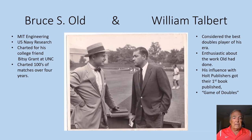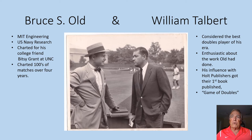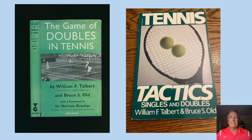When it was published it sold over 50,000 copies. Eventually these two wrote an additional three books, and they each sold about 50,000 copies as well. It became the bible for tactics for singles and doubles of the day. The first book was The Game of Doubles in Tennis, and the last was The Tactics of Singles and Doubles. All of them were very successful.